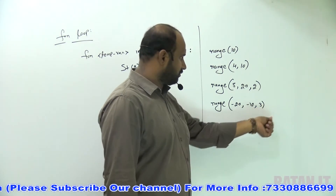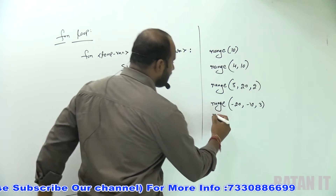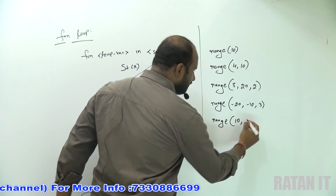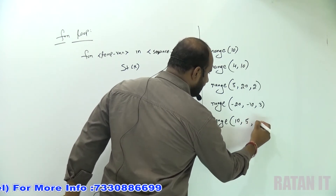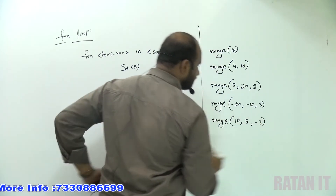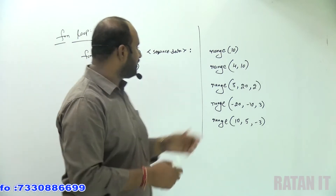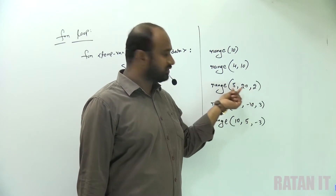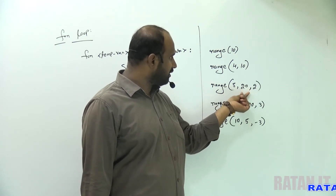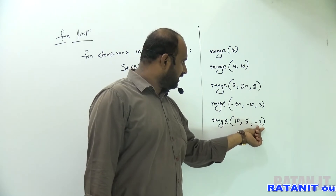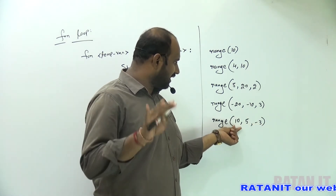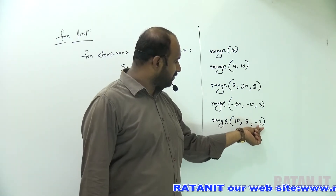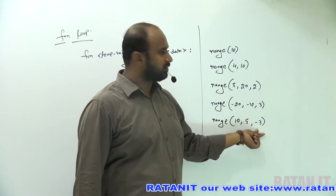You can also do decrement. Range of 10 to 5 — here the increment value is minus 3. If you give a positive increment value, the starting value must be less than the ending value, so 5 to 20 is printed incrementing by 2. But if you want decrement, for example printing 10 down to 5, the increment value is minus 3.